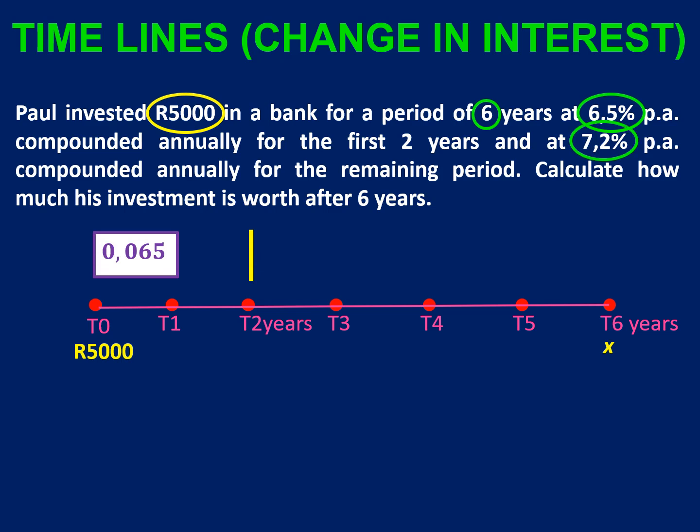Then the interest rate is going to change — it's going to increase to 7.2% because we're a very good client and they want to reward us. When we substitute it into the formula, we divide 7.2 by 100 to get 0.072. We want to know how much the investment will be worth after six years, so we're using the compound interest formula.